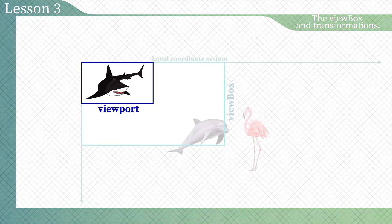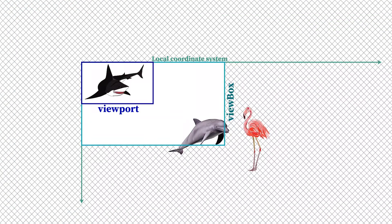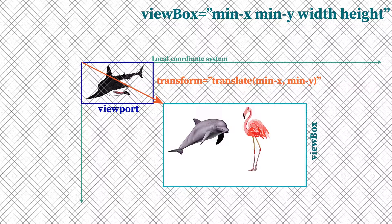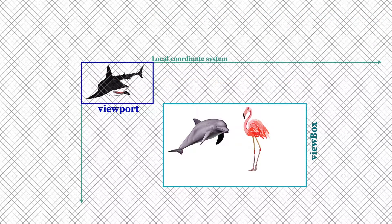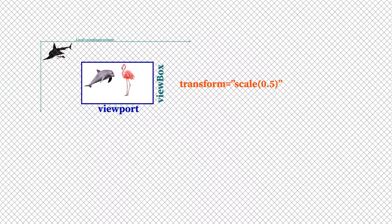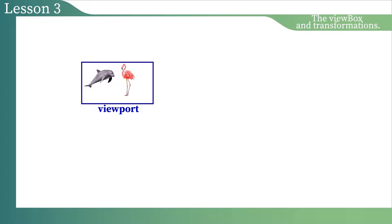So, in this lesson, we have learned that the viewbox can differ from the viewport in its size and its position. We have also learned that to bind the viewbox layer with the local coordinate system layer, the user agent uses the transform translate function, and uses it again to connect the viewport layer with the bound layers. To fit the viewbox inside the viewport, the user agent applies a transform scale function with a scale coefficient as a parameter. In the next lesson, we will learn about more complicated cases when the aspect ratio of the viewbox and the viewport differ, and we will learn how, when, and why to use the preserveAspectRatio attribute.